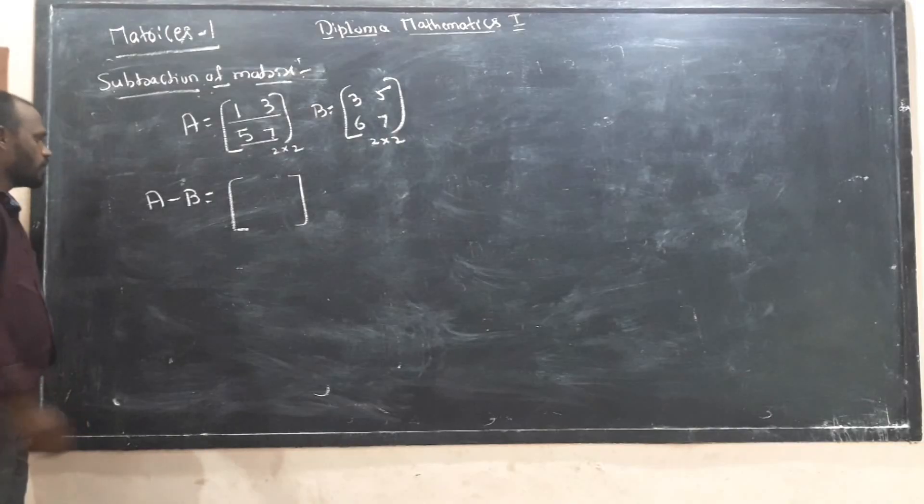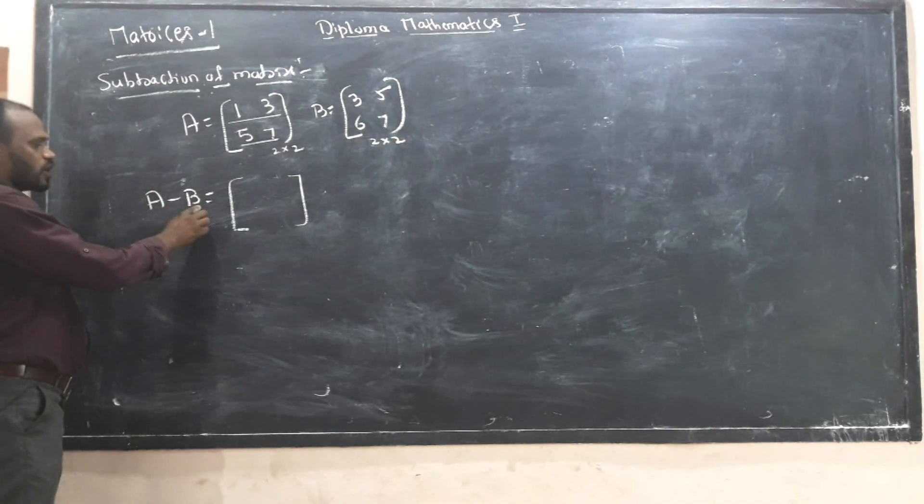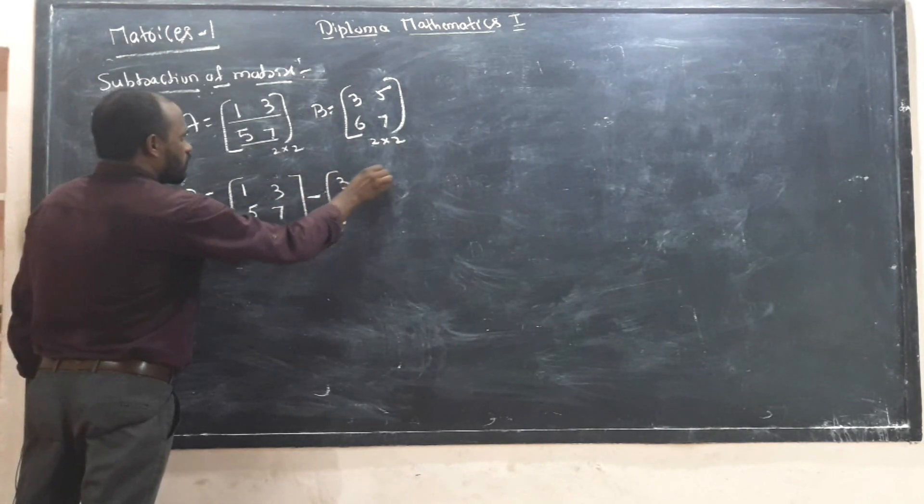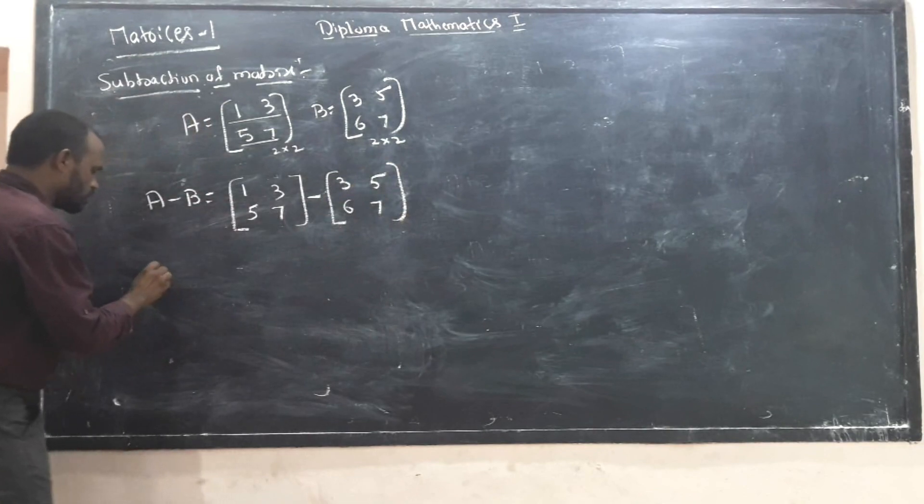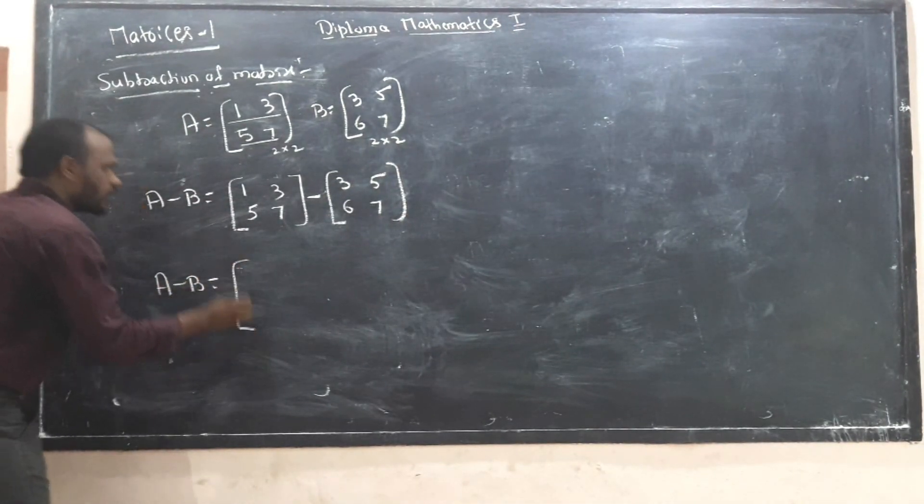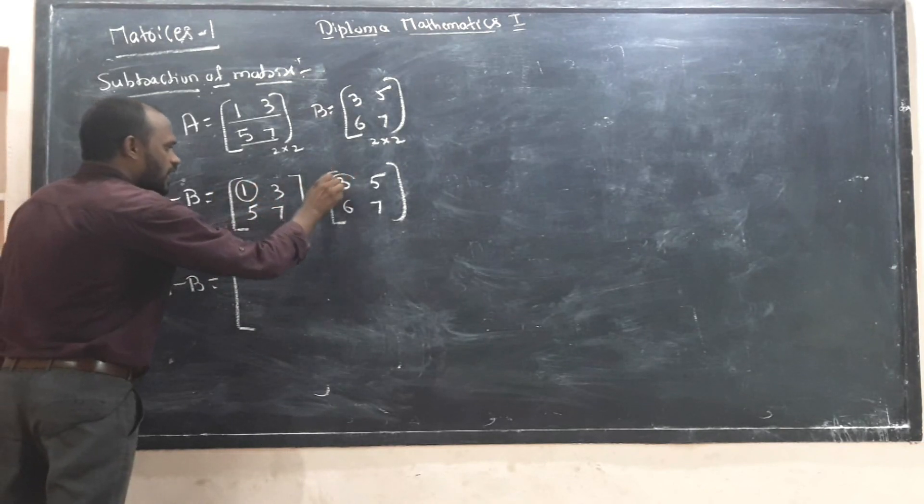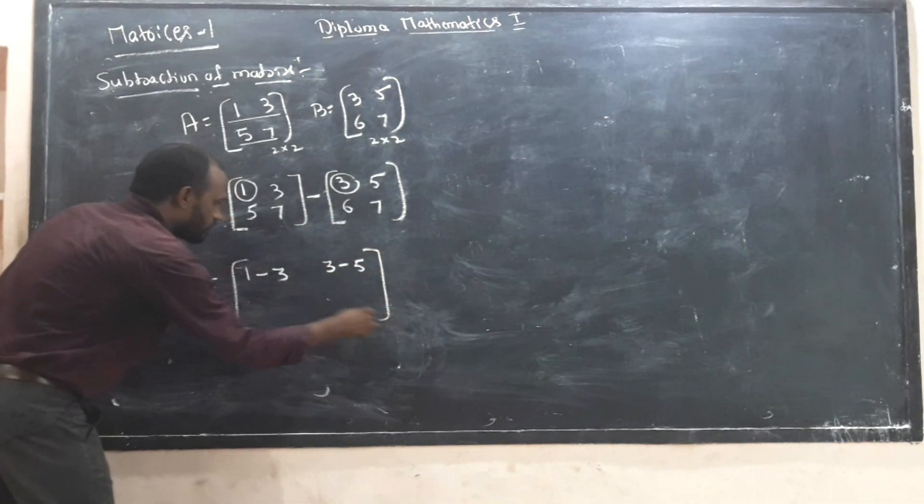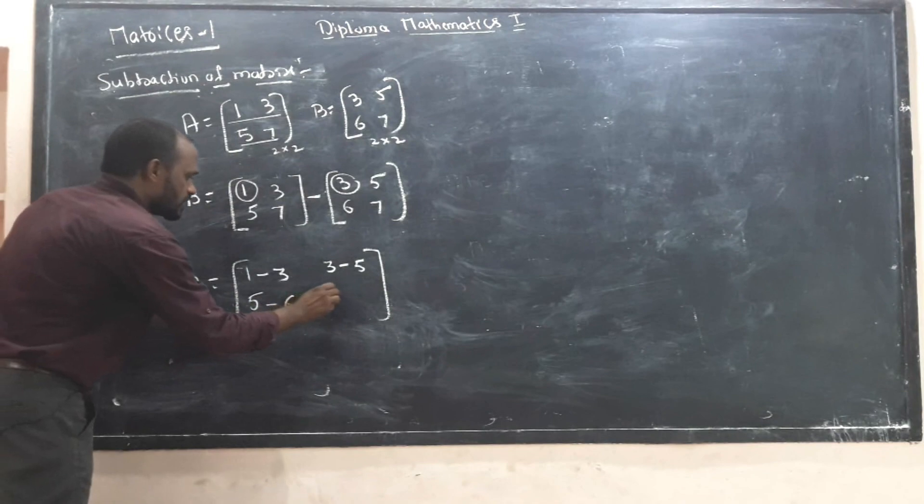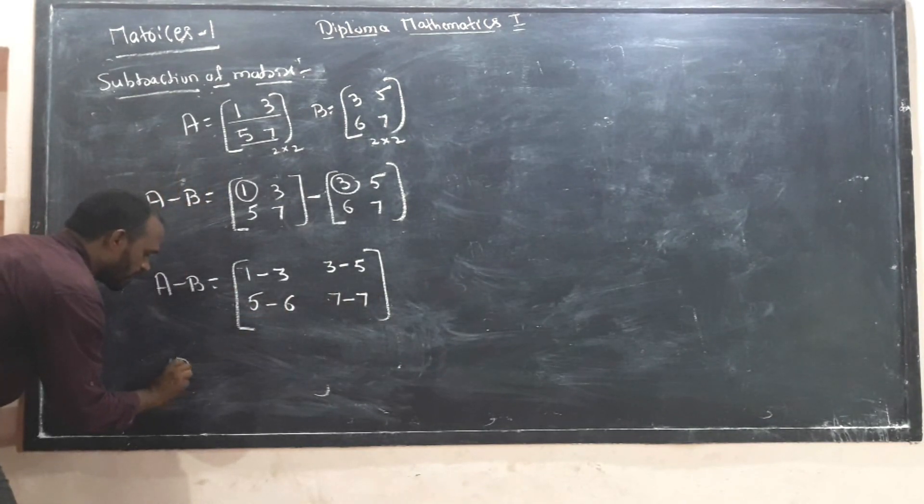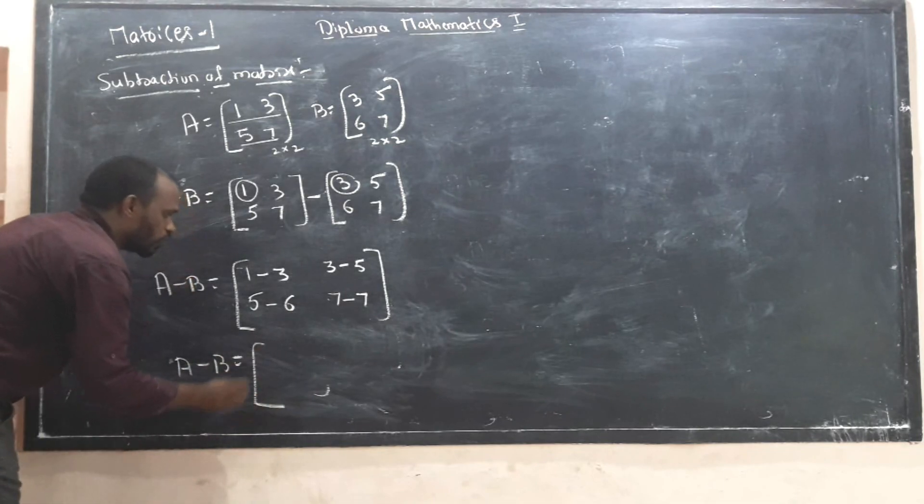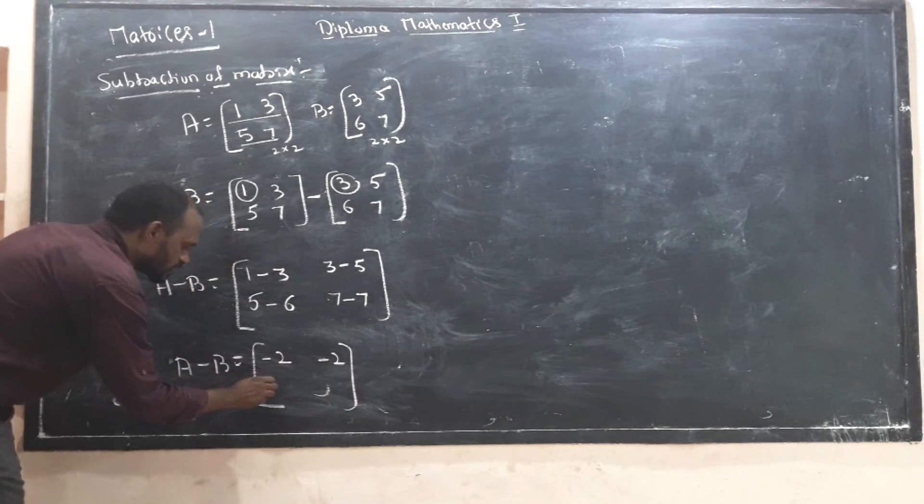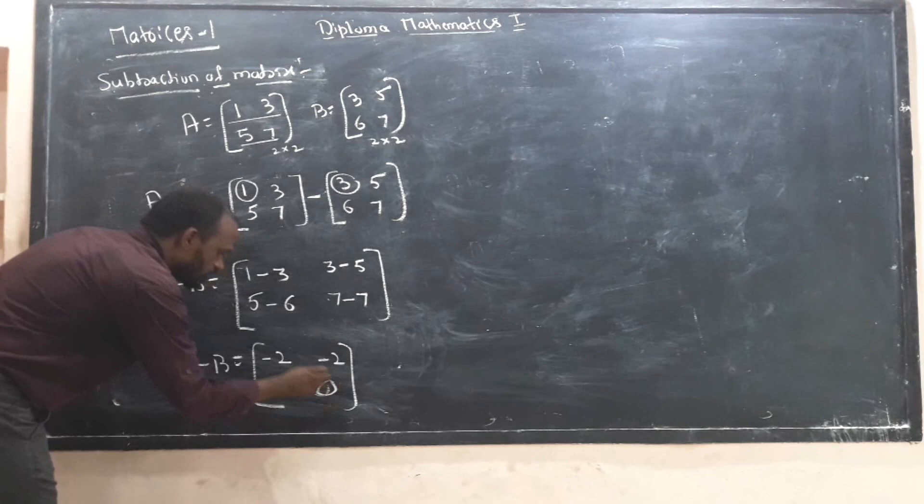A minus B equals A which is 1, 3, 5, 7 minus B which is 3, 5, 6, 7. First element minus first element: 1 minus 3, 3 minus 5, 5 minus 6, 7 minus 7. Calculating this gives 1 minus 3 equals minus 2, 3 minus 5 equals minus 2, 5 minus 6 equals minus 1, 7 minus 7 equals 0.